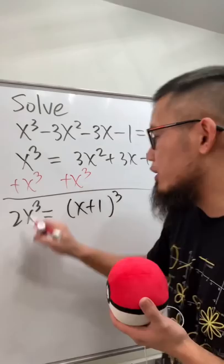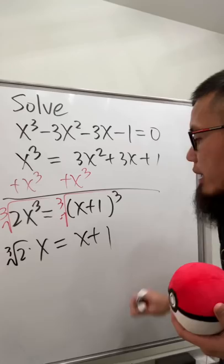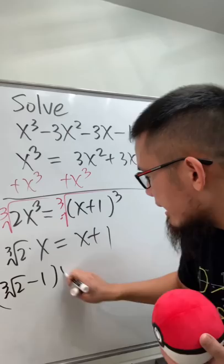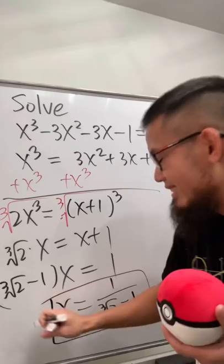Take the cube root of both sides to get the real solution: ∛2 · x = x + 1. Move x to the other side and factor: (∛2 − 1)x = 1. Dividing gives x = 1/(∛2 − 1).